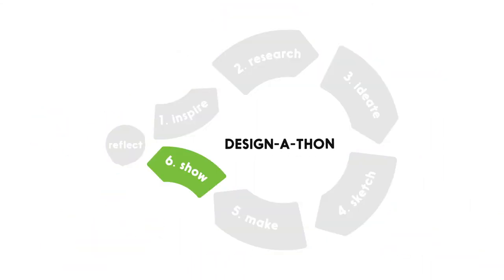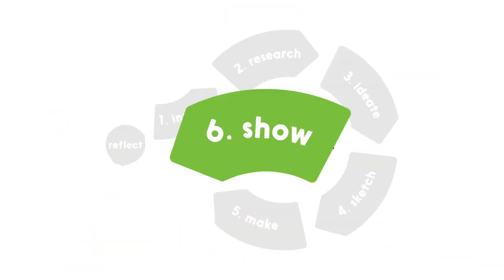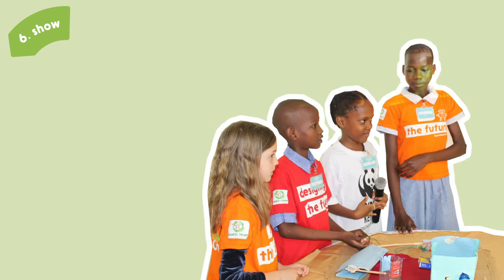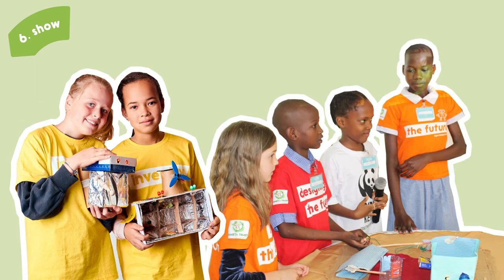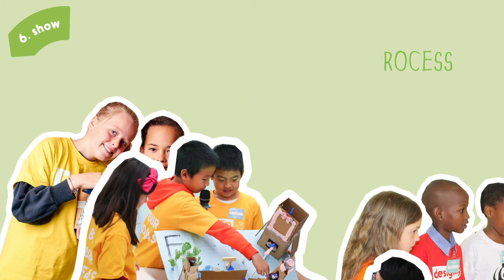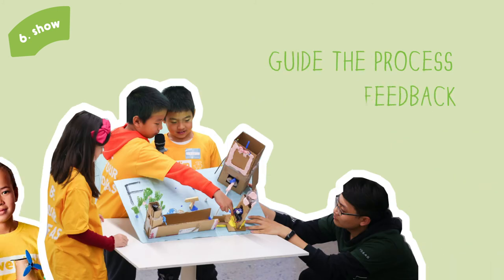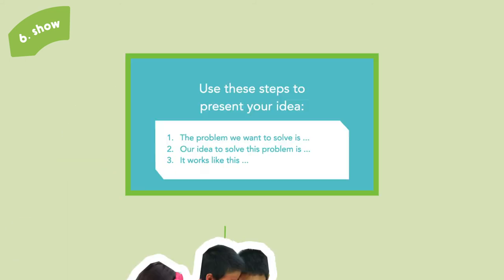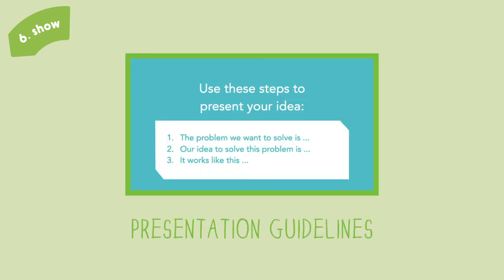Step 6: Show. Children share their idea and prototype. In doing so, they learn to present to an audience and discuss their ideas and work process. Your role is to guide the process and give feedback. Here the children use the presentation guidelines.